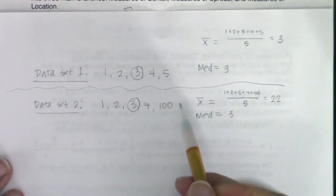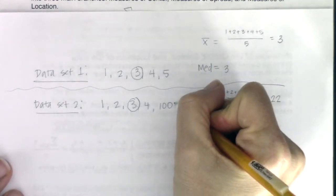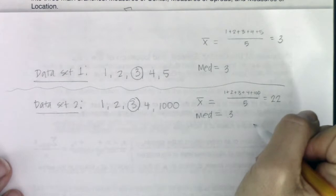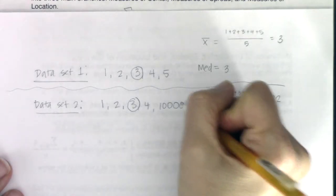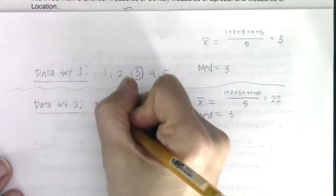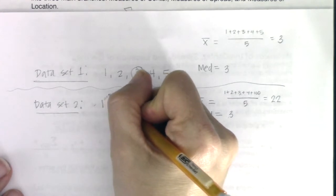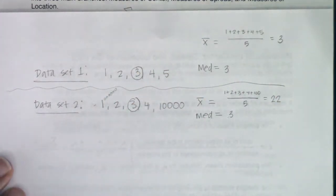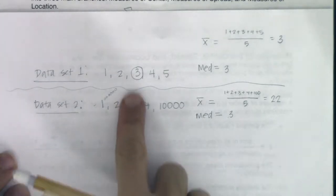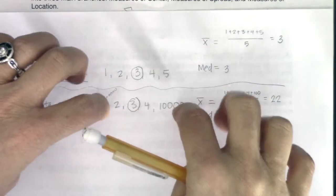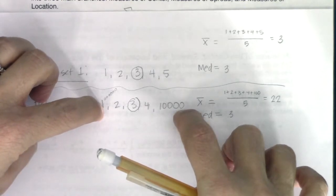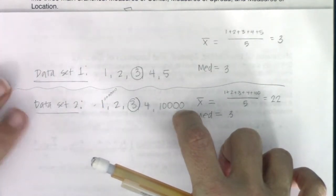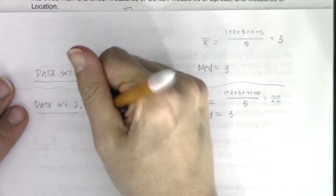You can imagine if this was 1,000 instead of 100, the median would have stayed 3 while the mean would have gotten much larger. 10,000 — median stays the same. Even negative 1,000,000 — median would have stayed the same. Since the median is the middle number, it's not affected by what's happening on the outside of your data set, which is why we say the median is resistant to outliers.